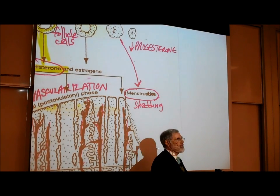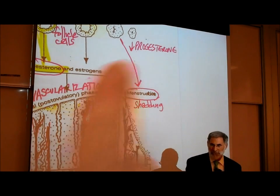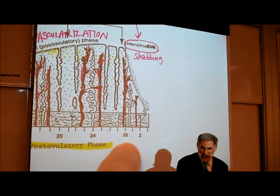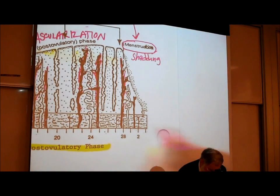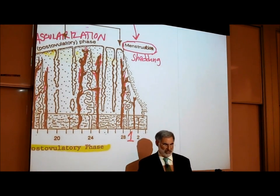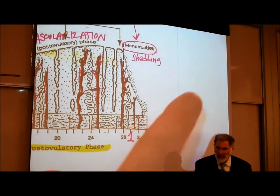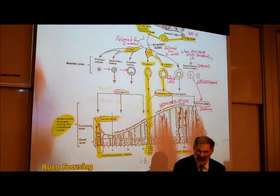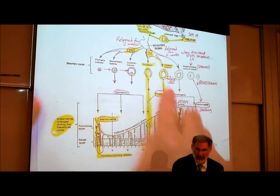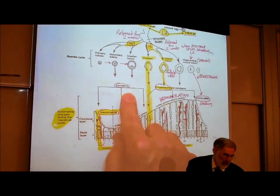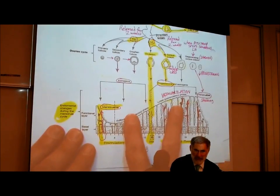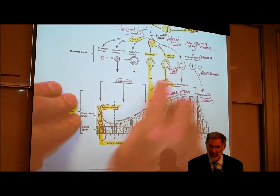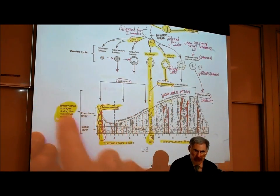The drop in the progesterone hormone level leads to shedding of those blood vessels — menstrual bleeding. It was the progesterone that caused growth of blood vessels, and the drop in progesterone leads to their shedding. The first day the woman notices the shedding would be called day one of a new cycle. So it is really these two hormones from the pituitary that control the ovaries, and it is the ovarian hormones — estrogen and progesterone — that affect the womb or uterus.